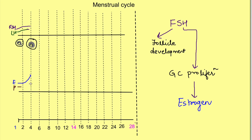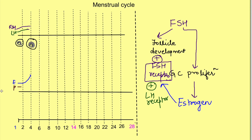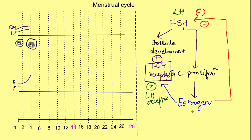By day 4 estrogen has risen, while progesterone is not yet changing. Estrogen and FSH also cause increased expression of FSH receptors on the granulosa cells in the follicles, as well as expression of LH receptors. This means whatever FSH is present can act more effectively on the follicle. However, as estrogen increases by day 4 it starts having a negative feedback effect on LH and FSH, so FSH and LH levels start falling again by day 4.